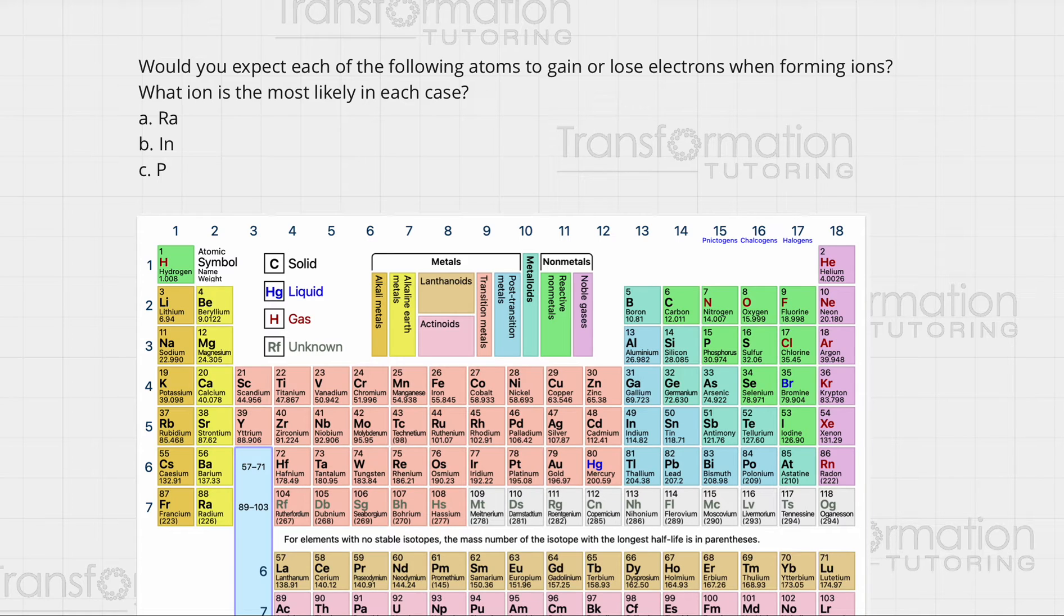So how do we figure out whether we are gaining or losing electrons? The general rule when we look at the periodic table is that group 1 elements will have a plus 1 charge, which means they will lose one electron. Why does that happen? All of the atoms on our periodic table want to have what we call an octet rule. They all want to have 8 valence electrons and be like group 18, which is the noble gases group.